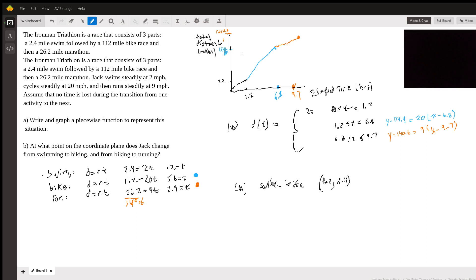So I'm just going to change colors again, finish this off. So this was swimming to biking and then they want biking to running. And that's going to be 6.8 comma 114.4. And that's it. We've answered the question.